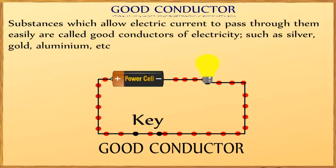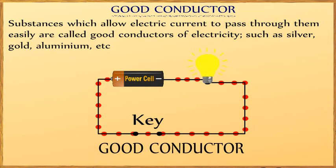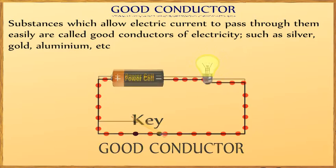Substances which allow electric current to pass through them easily are called good conductors of electricity, such as silver, gold, aluminum, etc.